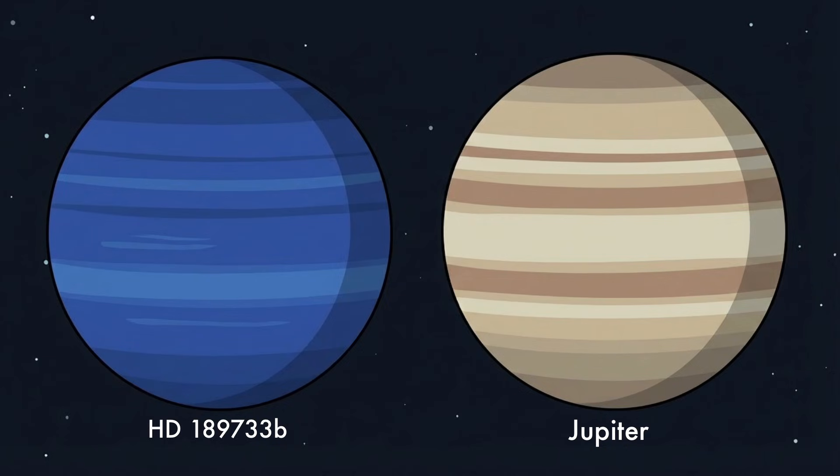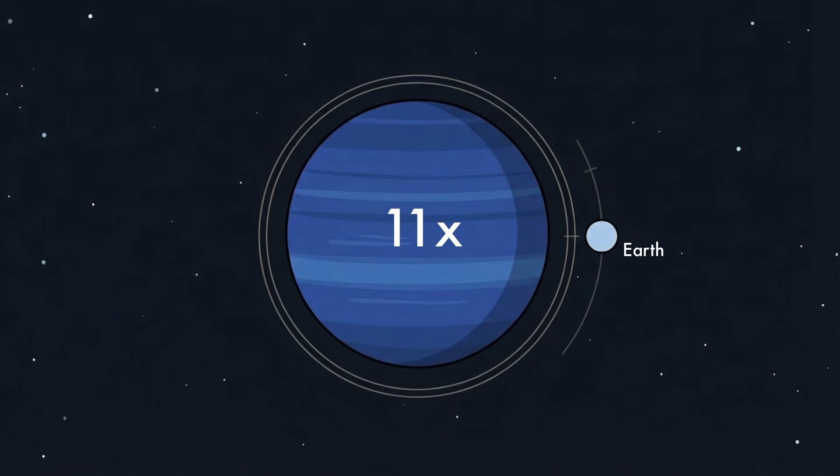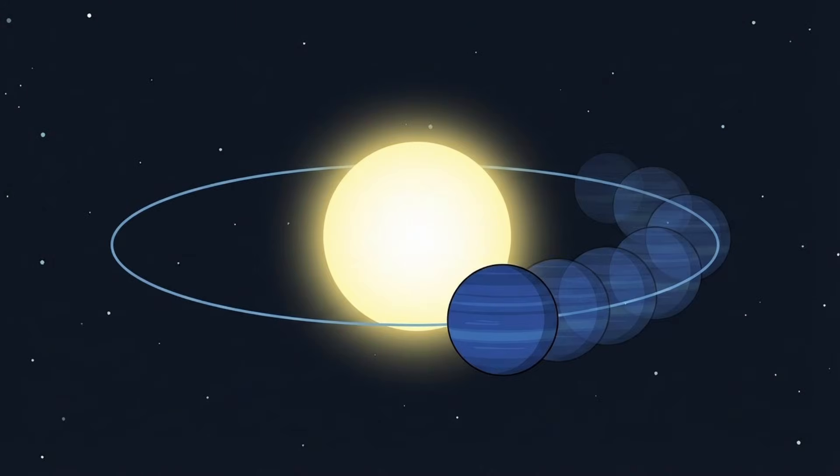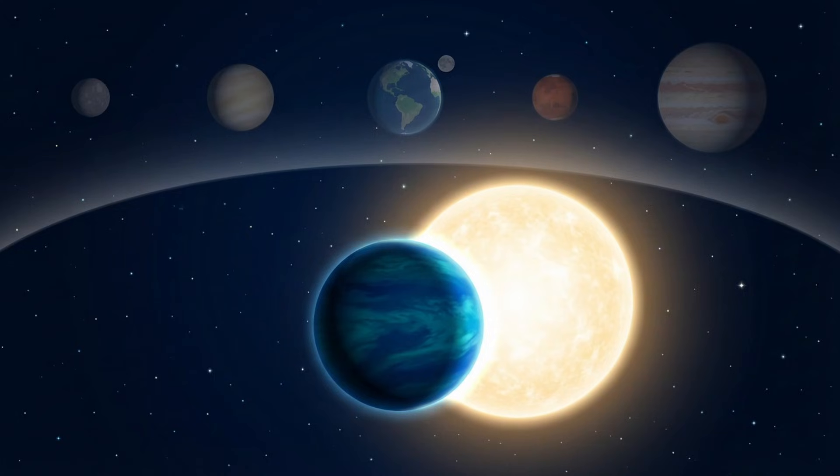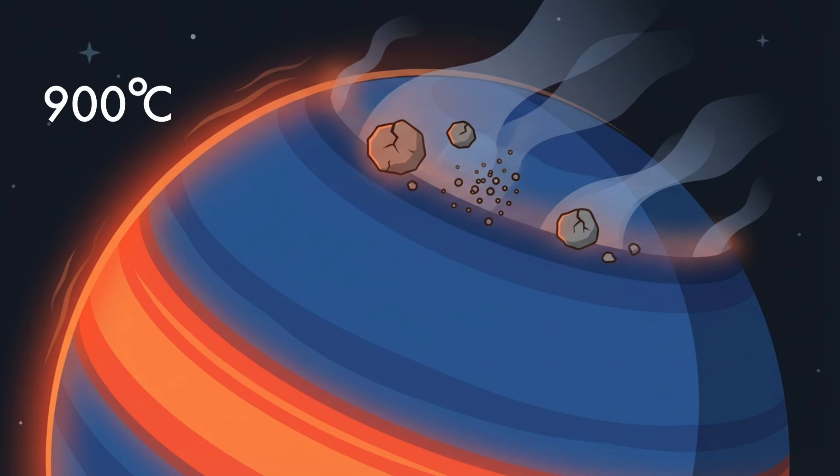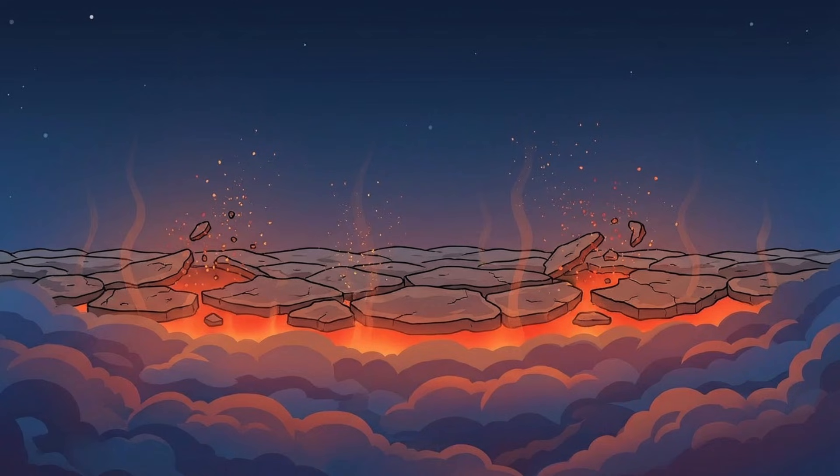The planet is a gas giant roughly the size of Jupiter, more than 11 times wider than Earth. It orbits its star once every 2.2 Earth days, meaning its entire year passes in a long weekend by human standards. From the start, it exists in a regime nothing in the solar system experiences. Temperatures on the planet reach around 900 degrees Celsius, hot enough to vaporize rock.